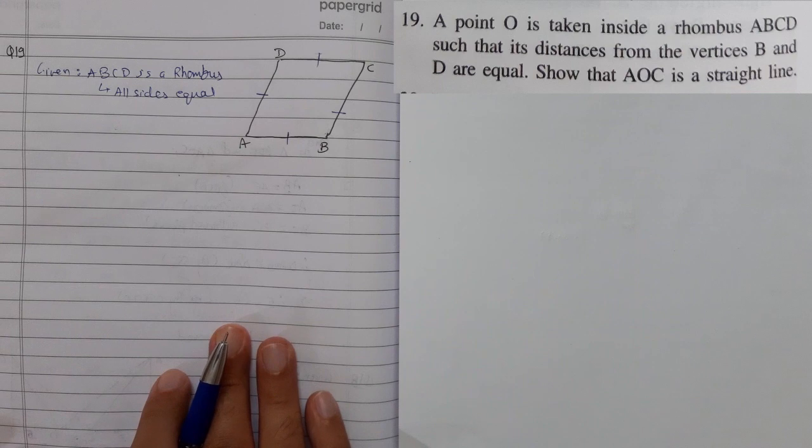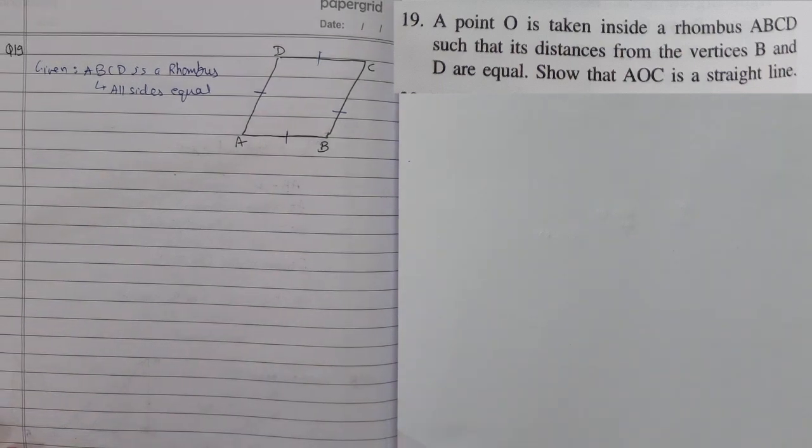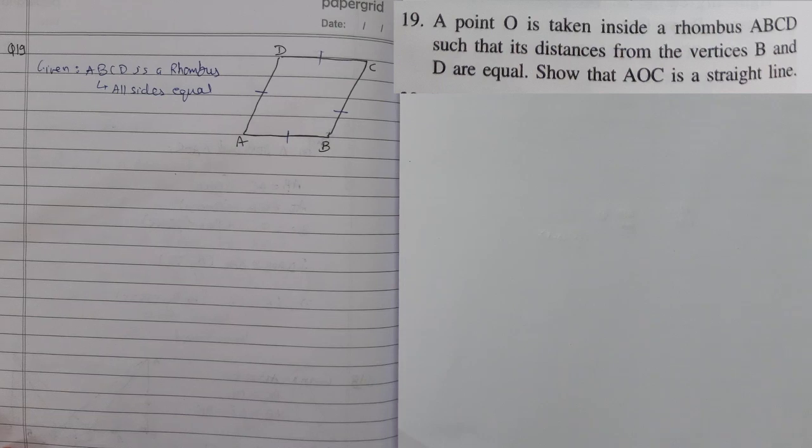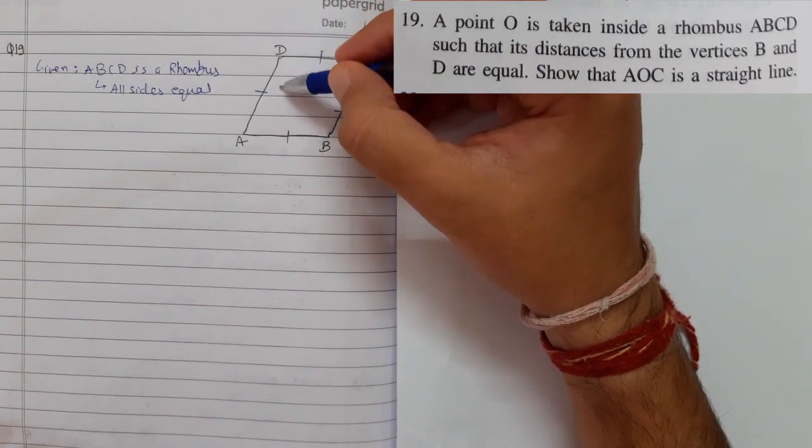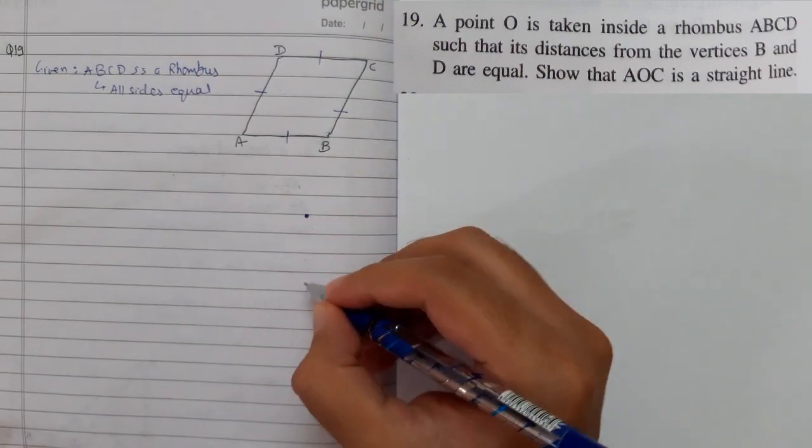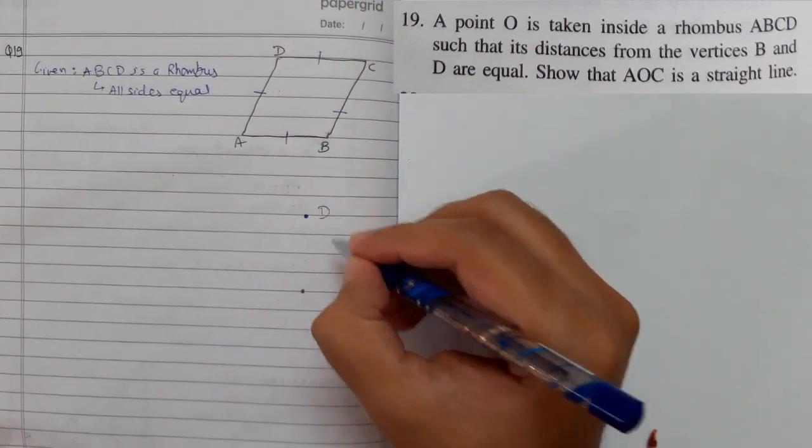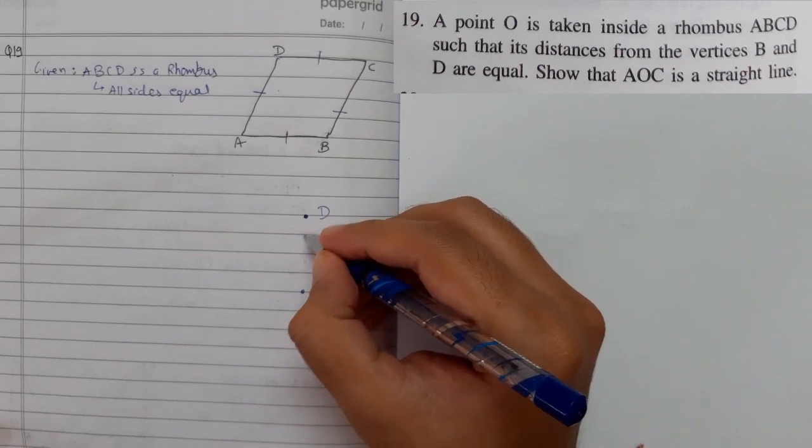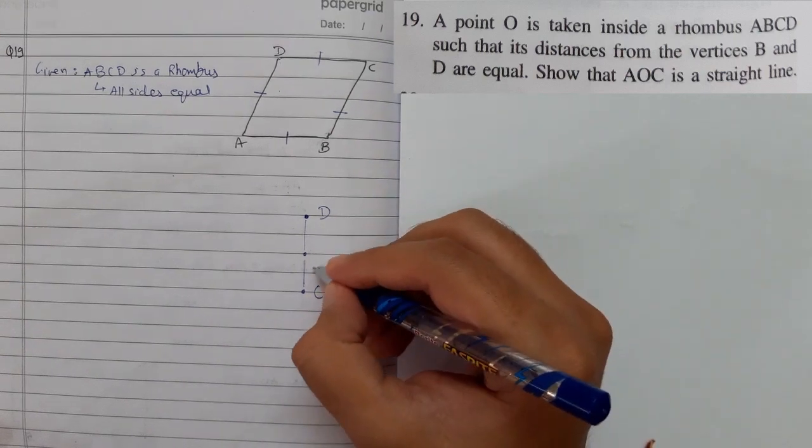Now they are saying point O is taken inside rhombus such that it is equidistant. The distance from the point vertex B and D is equal. If the point can be here, here, whatever. But let's try to understand. There are two points, they are in diagonal shape. I am just taking them straight. There is a point which is equidistant, which is somewhere here. We can see that very easily.